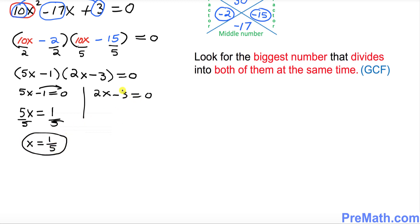For the second equation, move this negative 3 to the other side so 2x equals positive 3. Divide both sides by 2, so x equals 3/2.